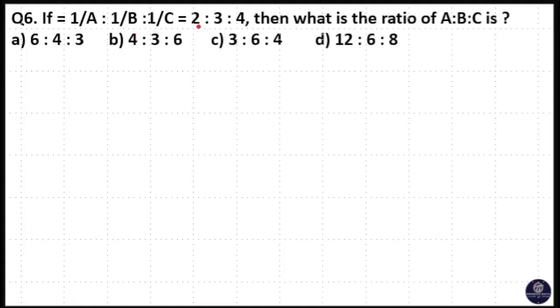If 1/A : 1/B : 1/C = 2 : 3 : 4, then what is the ratio of A:B:C?